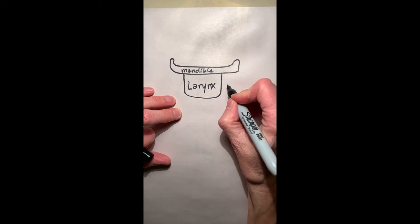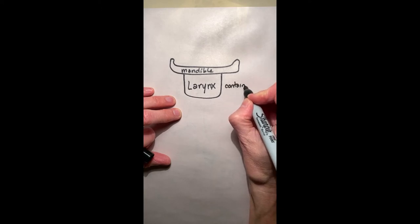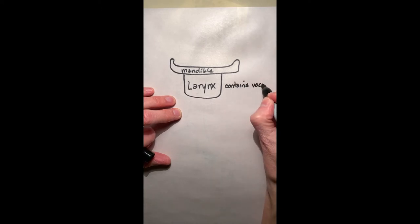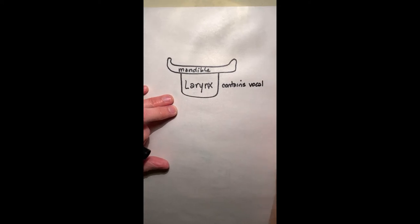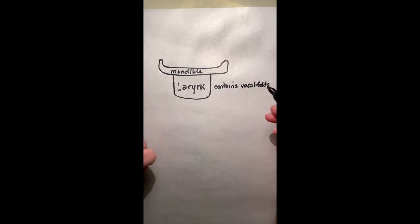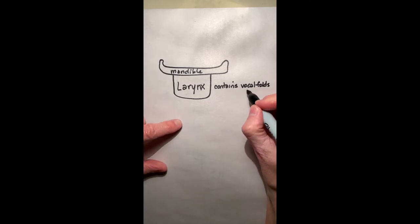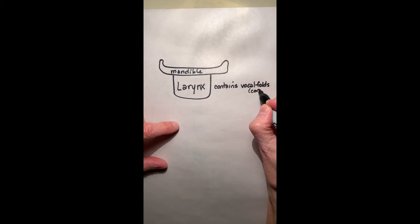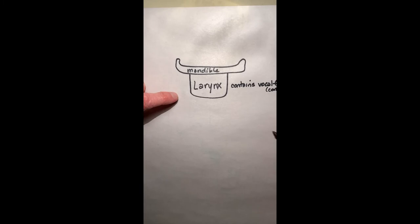The larynx. And the larynx contains the vocal cords, or as you'll learn later, the vocal folds. But that's later. So for right now we're just going to call them vocal folds and you'll learn vestibular folds later, but vocal folds as vocal cords, the vocal cords, you'll learn true and false later. But for now, good enough.